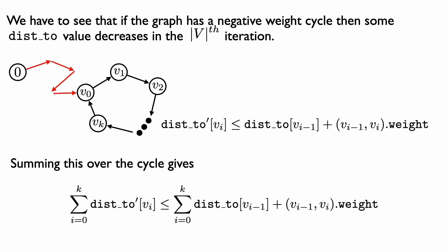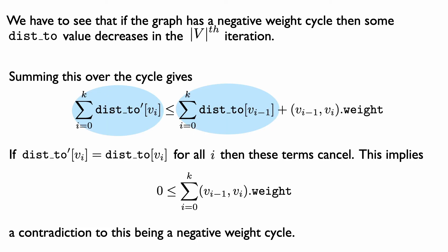We want to show that some dist2 prime of vi is less than dist2 of vi. Suppose that this is not the case — suppose that dist2 prime of vi equals dist2 of vi for every i. We also know that all dist2 of vi values are finite, and thus so are the dist2 prime of vi values. If dist2 prime of vi equals dist2 of vi for every i, then the two terms in the blue circles are equal, and since they're equal and finite, we can cancel them. The inequality then says that the sum of the edge weights around the cycle is non-negative, which is a contradiction to this being a negative weight cycle. This shows that some dist2 prime of vi must be strictly less than dist2 of vi, which is what we wanted to show.